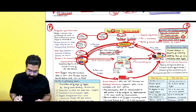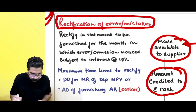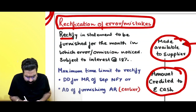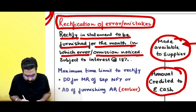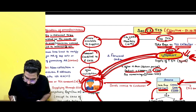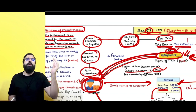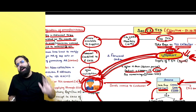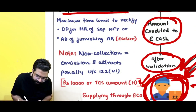For rectification of error or mistake: if Flipkart made some mistake in a month, rectify it in the statement to be furnished for the month in which the error or omission is noticed, subject to interest at the rate of 18%. For example, if Flipkart did not deduct some TCS amount by mistake, whenever they notice the mistake they can deduct and pay the TCS to the government along with interest at 18%.